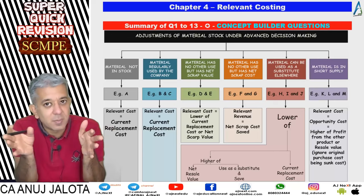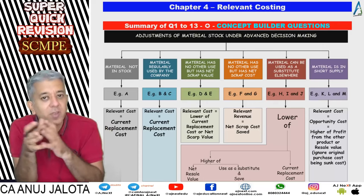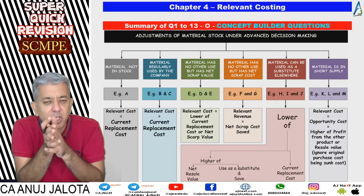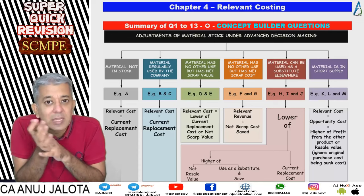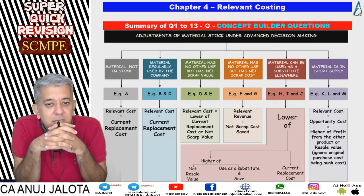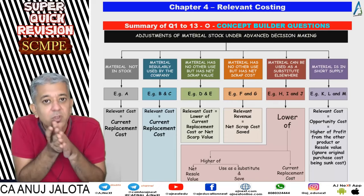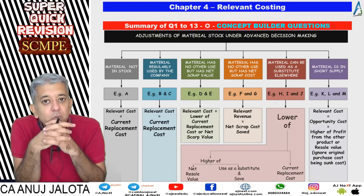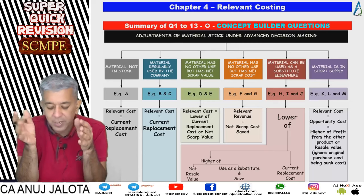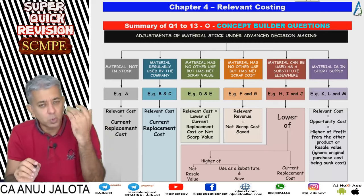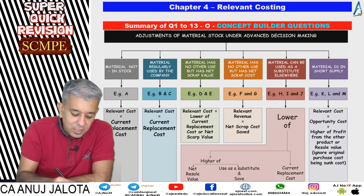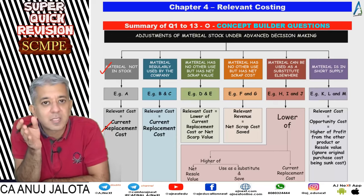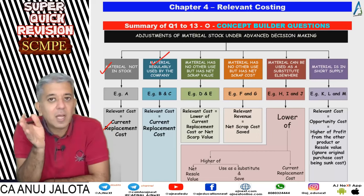In Chapter 4, today's lecture is dedicated to concept building only. The first 13 questions involved material adjustments — we had to find out relevant cost or relevant revenue. If an offer comes in and material is required to evaluate it, material cost must be considered. First case: if material is not in stock, you will have to purchase it, so your relevant cost will be nothing but the current replacement cost — whatever it costs to buy from the market right now.